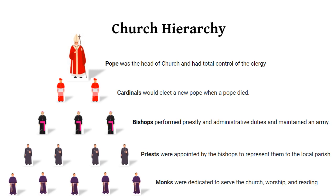The Pope, as the head of the church, had great impact over the king and total control of the clergy. The Pope had certain duties to perform; above all was to decide the matters of spiritual importance and the official policies of the church. Immediately below the Pope in the hierarchy of the Catholic Church were the cardinals. The primary responsibility of the cardinals was to elect a new pope when a pope died.